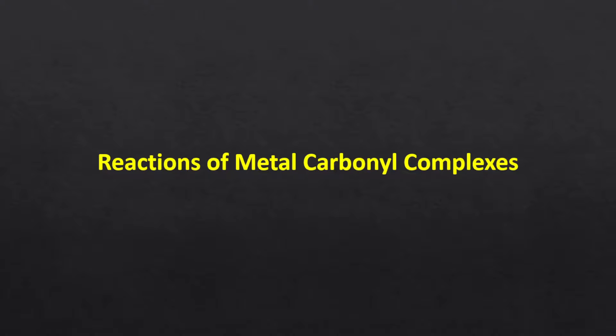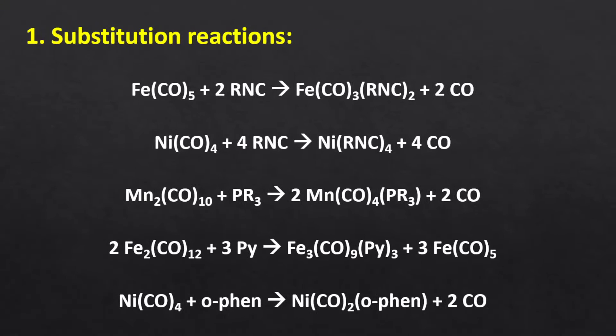The next topic is the reaction of metal carbonyl complexes. These complexes give a variety of chemical reactions. The first is substitution reaction. Substitution of the carbonyl ligand can be carried out using thermal and photochemical reactions. Ligands like isocyanide, trialkyl phosphine, pyridine, and phenanthroline undergo either partial or full substitution reactions.